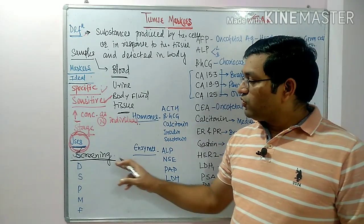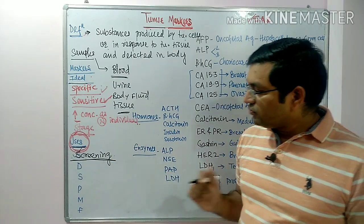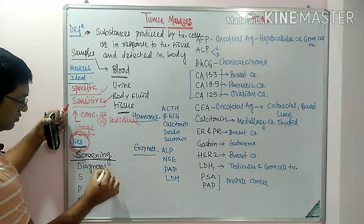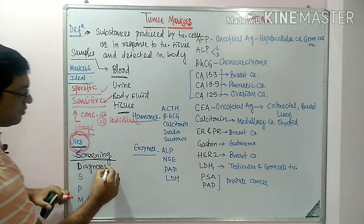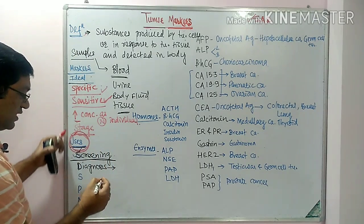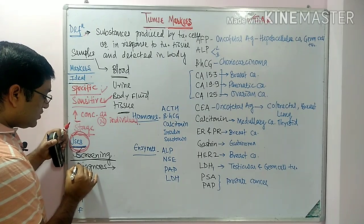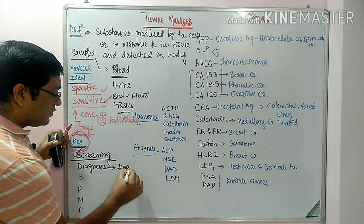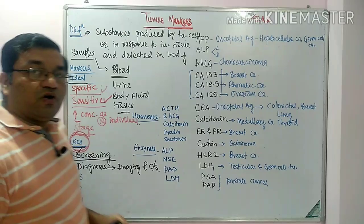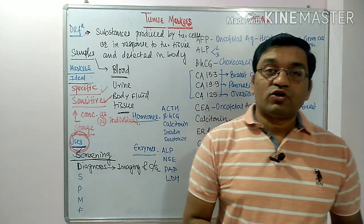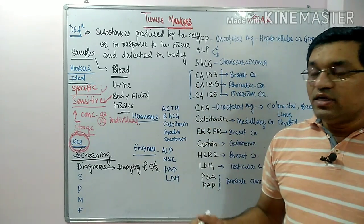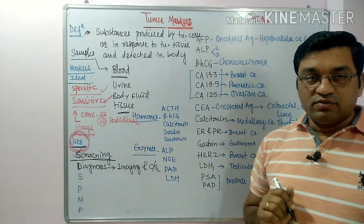Another example for screening is mammogram, used for screening of breast carcinoma. The second use is diagnosis — tumor markers are used in the diagnosis or confirmation of cancer along with imaging techniques such as CT scan, MRI, and PET scan, and along with clinical symptoms. For example, alpha-fetoprotein levels are used for the diagnosis of hepatocellular carcinoma.